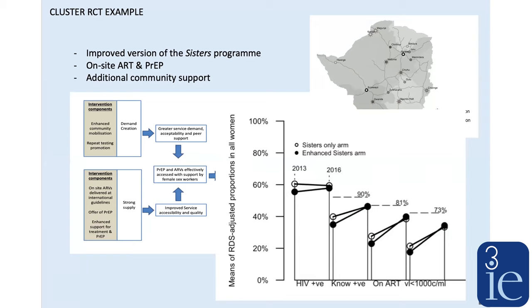We compared the two arms in terms of four different main outcomes — essentially what is called the treatment cascade. This looks across the whole population of women and asks: how many are HIV positive, how many of those know they're positive, how many are on antiretroviral therapy, and how many have suppressed their viral load sufficiently so they're very unlikely to pass on the virus to somebody else. This diagram shows how the levels of those outcomes changed over time between 2013 and 2016. In 2016 at least, the levels of these outcomes are all very high for sex workers in any country.